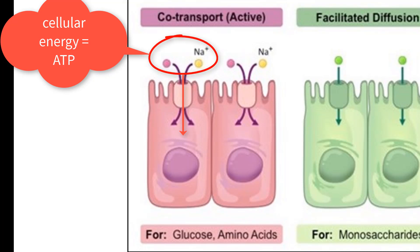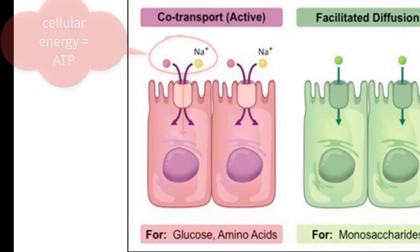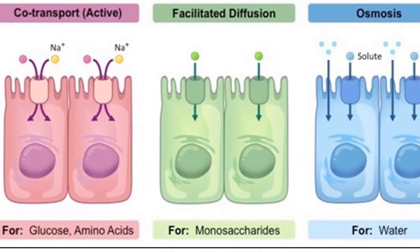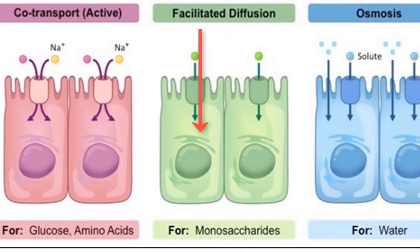Co-transport occurs for molecules like glucose and amino acids. Next, we have facilitated diffusion. This is where channel proteins help hydrophilic molecules move across the hydrophobic part of the cell membrane. This requires no energy, just a gradient that moves molecules from high to low concentrations. Examples of molecules that use facilitated diffusion are monosaccharides like fructose, vitamins, and some minerals.